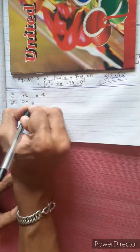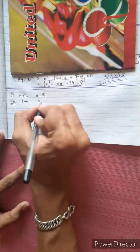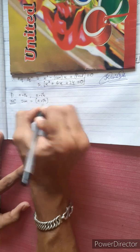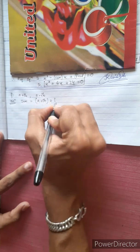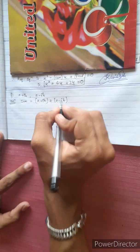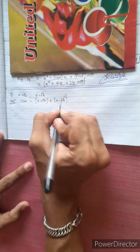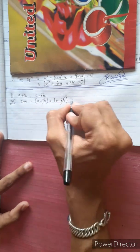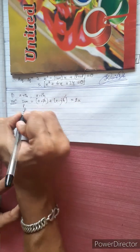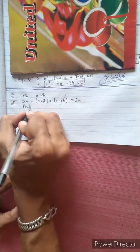Sum of roots equals (a + ib) + (a - ib), which gives plus minus 2a. Now let's find the product of roots.